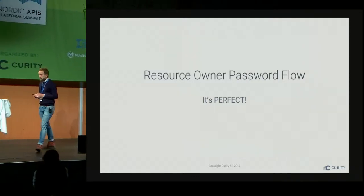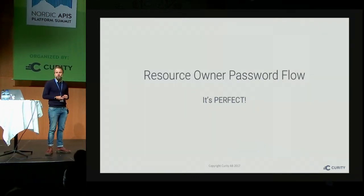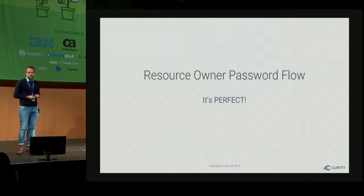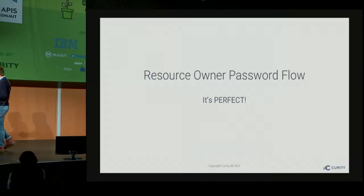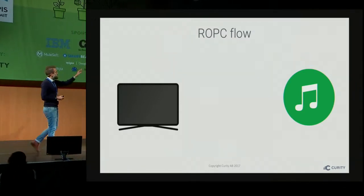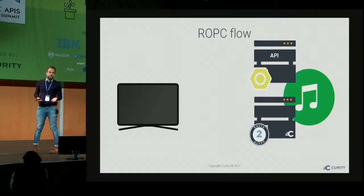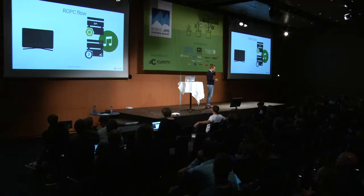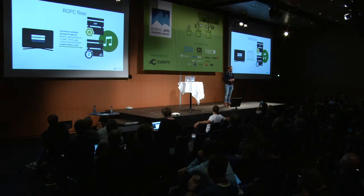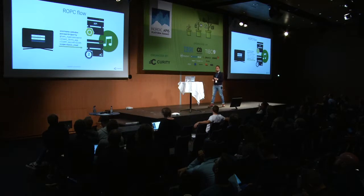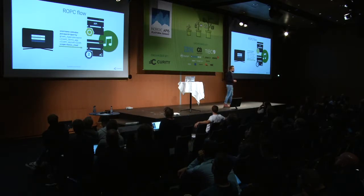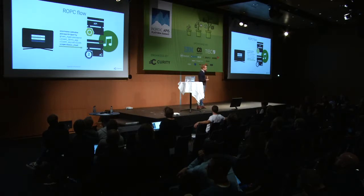So there's a flow: the Resource Owner Password Credentials flow, or ROPC flow. It works like this. We've got a service, we've got the TV, we've got an API which is the actual thing we'll talk to to get data, and we've got an OAuth server. What the ROPC flow does is it sends a POST request with a form URL-encoded body containing the username, the password, the grant type indicating we want to use the resource owner flow, the client ID — 'I am the TV app' — the client secret, and the scope 'music:read'.